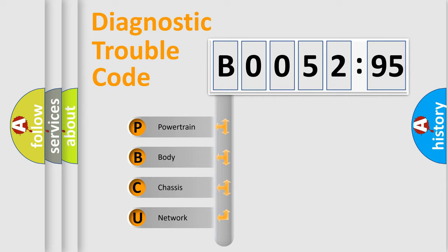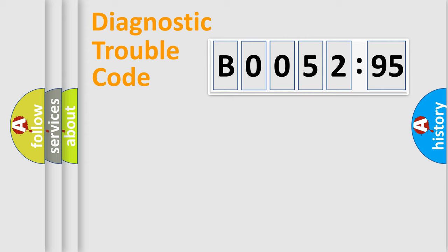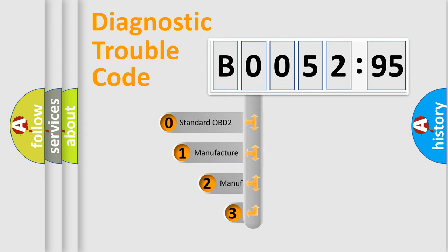We divide the electric system of automobile into four basic units: Powertrain, Body, Chassis, Network. This distribution is defined in the first character code.